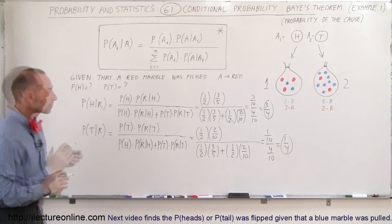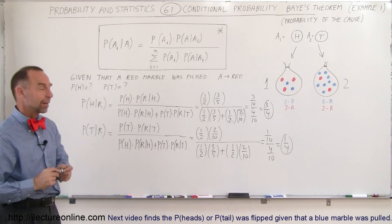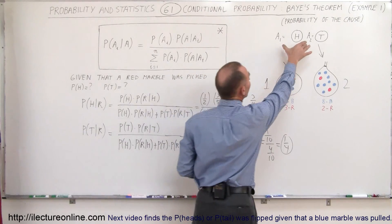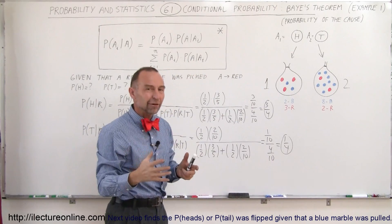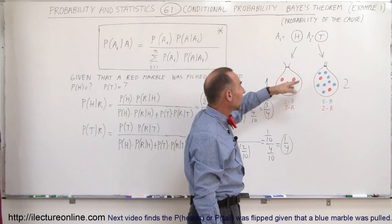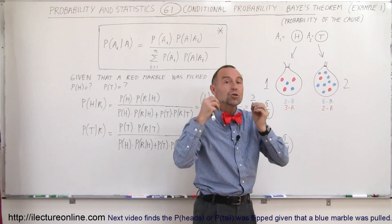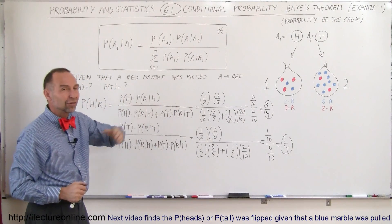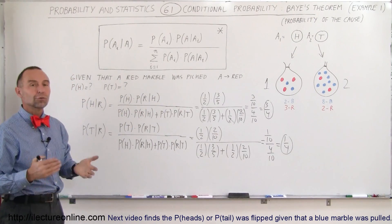When you add them all up it should equal a probability of one — either heads or tails — and it does appear to be correct. This is a nice example of how we use Bayes' theorem to determine the outcome of the initial event given prior knowledge of the secondary event. You toss a coin; heads means left bag, tails means right bag. You pull a red marble — so what was the probability of heads or tails? That's how you apply Bayes' theorem to figure that out.